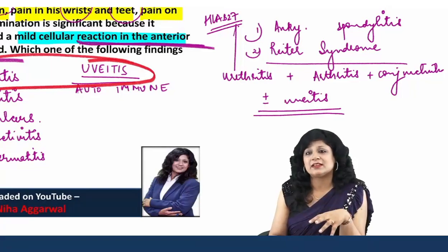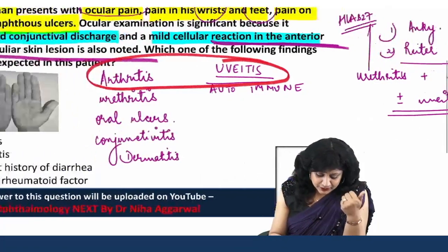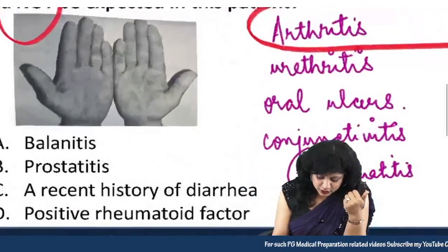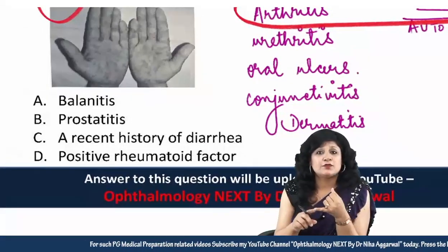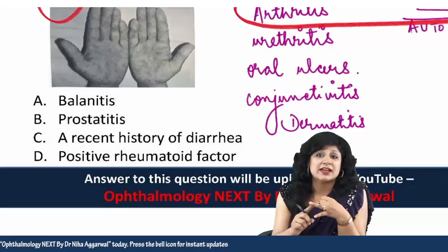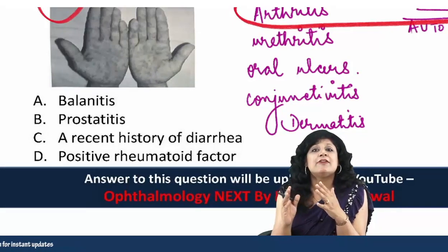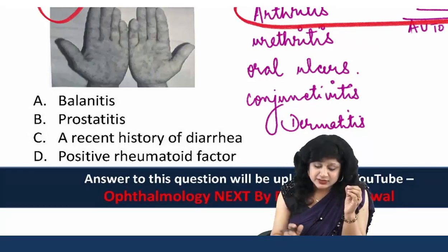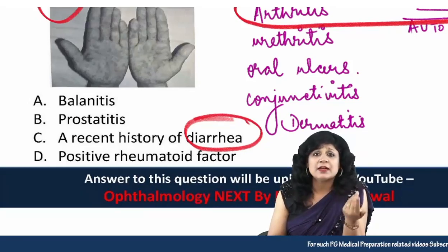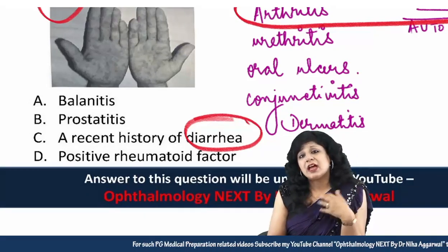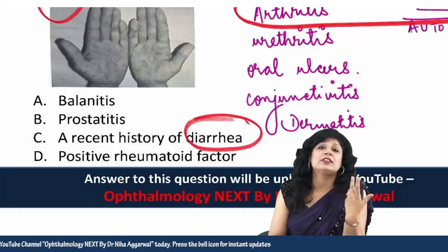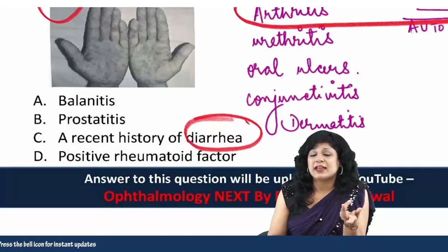Juvenile chronic arthritis is excluded because the patient is over 16 years of age. Looking at the options: balanitis — in Reiter's syndrome we can have balanitis, even prostatitis, with inflammation in nearly every organ. A recent history of diarrhea is also expected, as this could be inflammatory bowel disease.